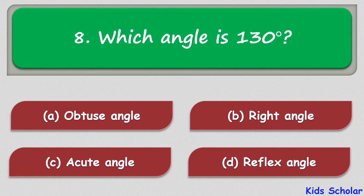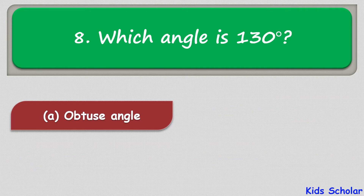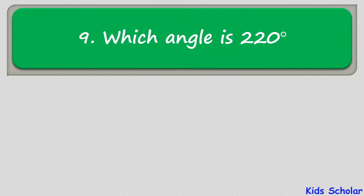The next question is: which type of angle is 130 degrees? The options are obtuse angle, right angle, acute angle, and reflex angle. The correct answer is obtuse angle.